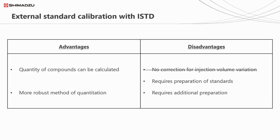This variation of the external standard calibration method therefore offers even greater robustness and more accurate results by accounting for variability in instrument response. But it does require even more preparation, as every sample and standard needs to be spiked with internal standard, and it's imperative that the amount of internal standard is either consistent across all standards and samples, or that the amount in each is accurately known and reported in the software so the calculations are performed correctly.